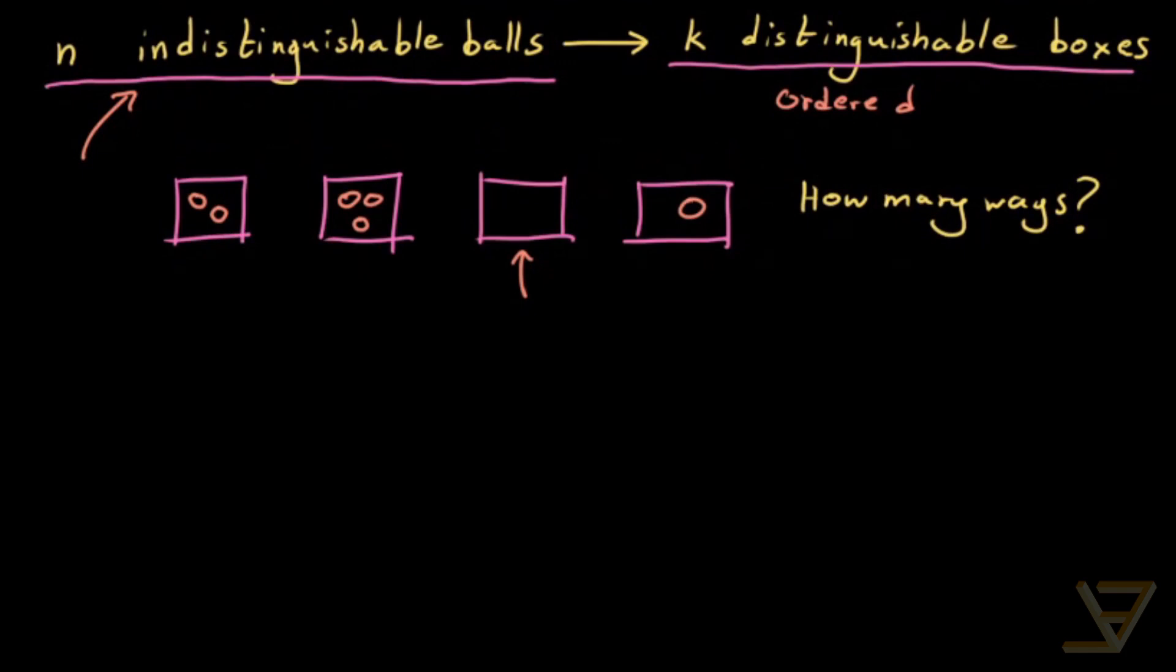We're going to be using a clever technique called sticks and stones. What we'll do is instill this order - box one, box two, box three, box four. Since we have K boxes, we're going to have K minus one sticks. So we have stick one, stick two, stick three.